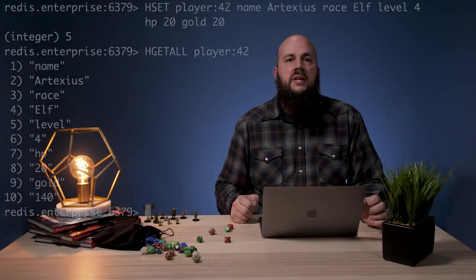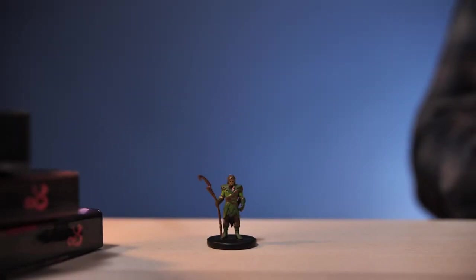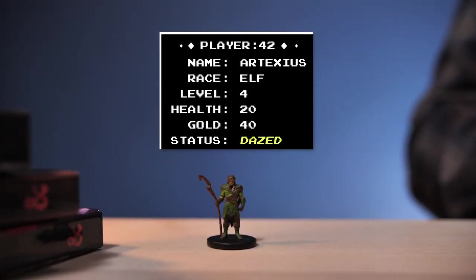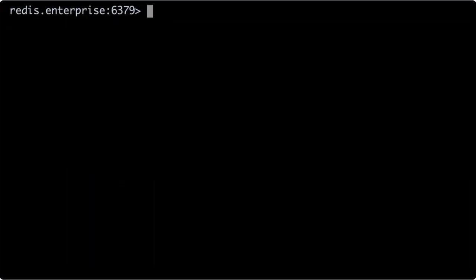Now let's see how to update and delete fields within a Redis hash. Imagine the player Artexius is having an epic battle with a wizard and received a thunderbolt spell to the head. In the game, he'll have a status of dazed. To reflect this game state in the Redis hash, we will add the field value pair status dazed to the player hash instance.